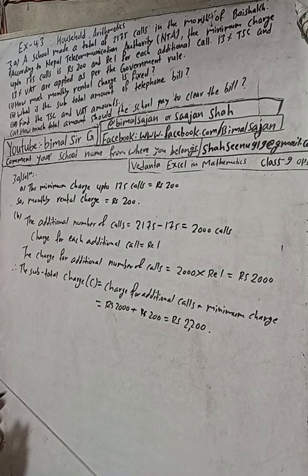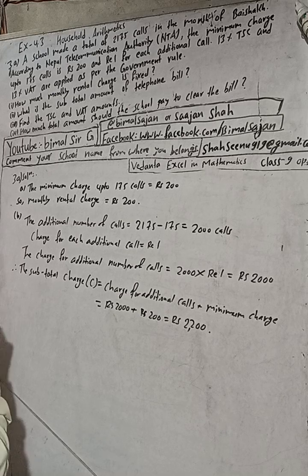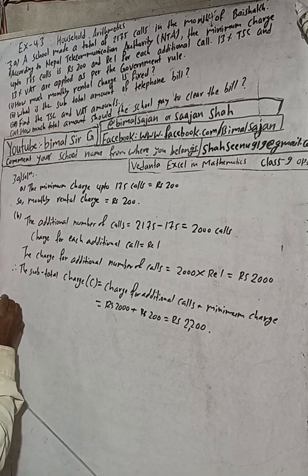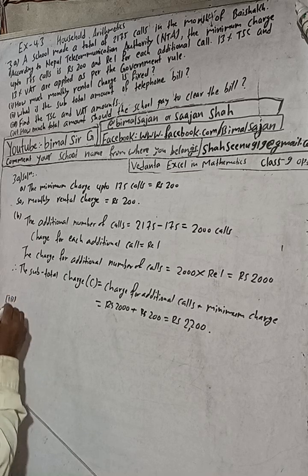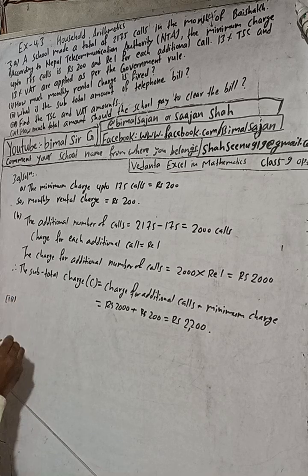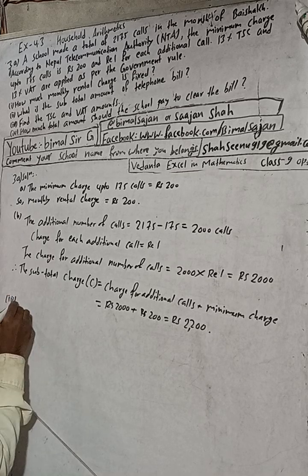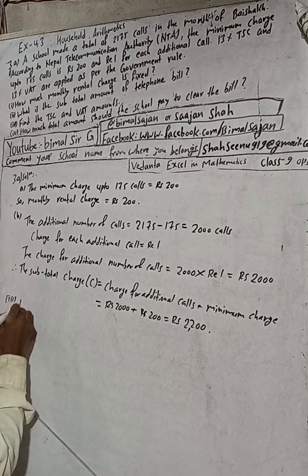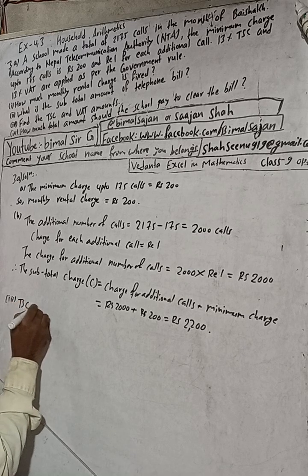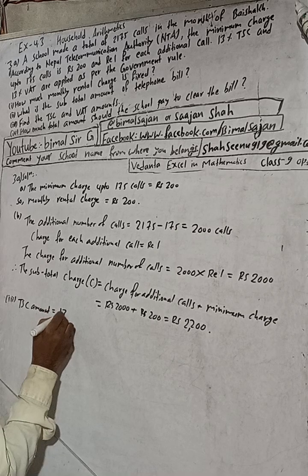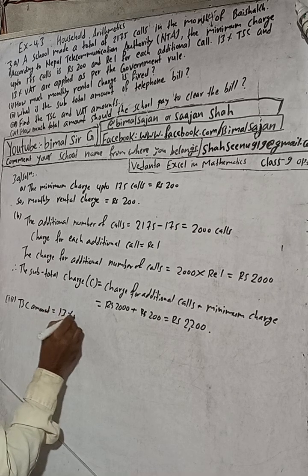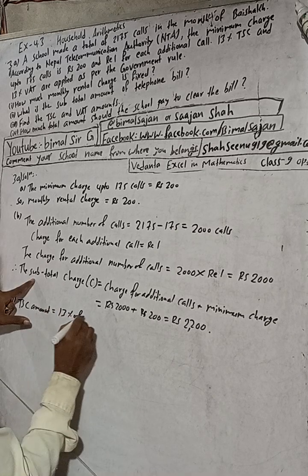Question number three: find the TSE and VAT amounts. To find the TSE charge, the TSE amount is equal to 13% of the total charge.